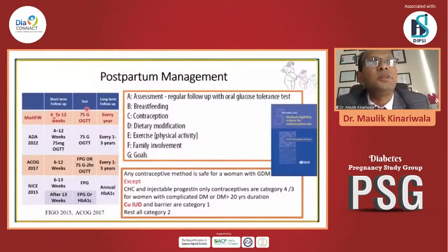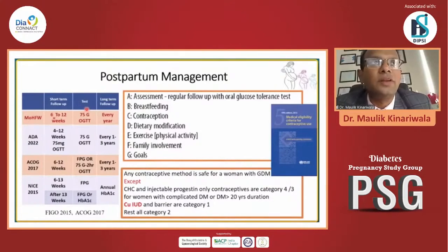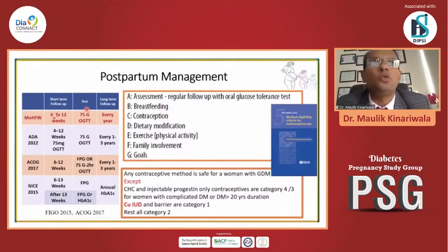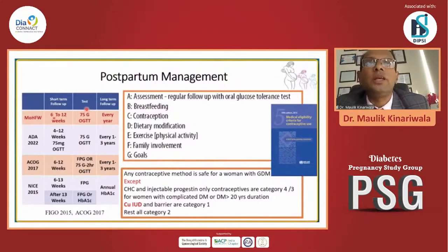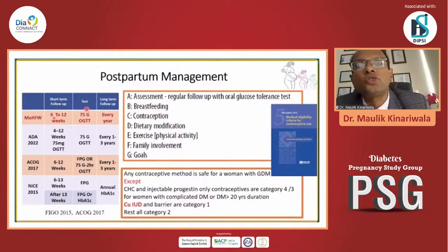The ADA 2022 and the 2015 NICE guidelines both provide recommendations on short-term and long-term follow-up. They all conclude that women with GDM require close follow-up up to 6 to 12 weeks after delivery, and even if glycemia is normal, they require at least once-yearly follow-up for the next three years to detect trends toward pre-diabetes or diabetes.